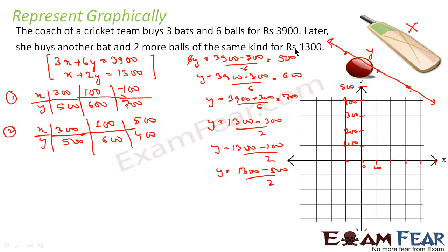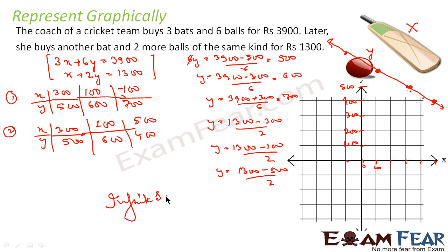Now let's draw the line for equation 2. The points are (300, 500) — same point as equation 1. (100, 600) — same point again. And (500, 400) — this point. If you see, the points are coinciding. That means both lines are the same. So this has infinite solutions. This is the graphical representation.